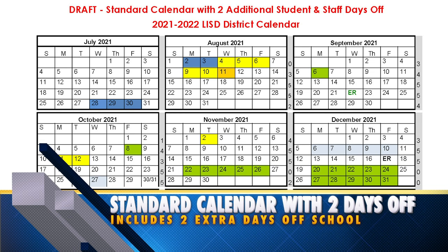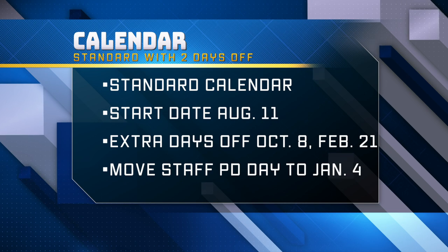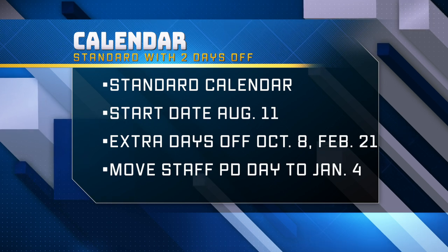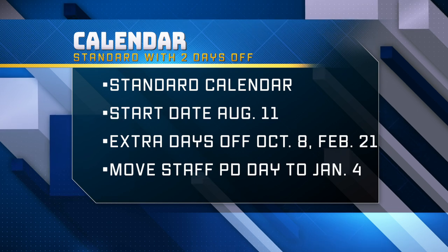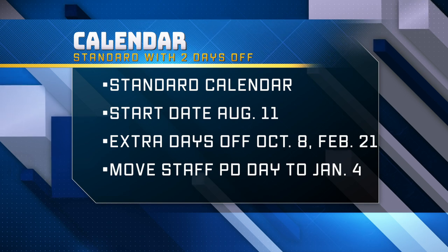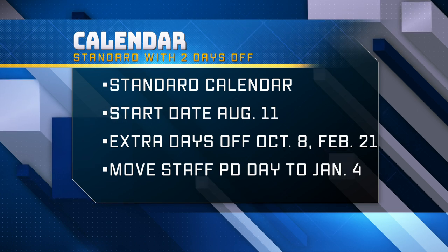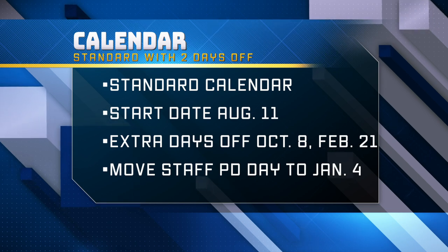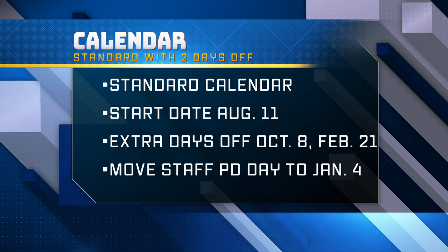The next option adds two extra days off for both students and school staff. A standard calendar with two additional student and staff days off includes the following tweaks: a start date one day earlier on Wednesday, August 11th instead of Thursday, August 12th; a student and staff day off on Friday, October 8th, on top of the professional learning and non-school days the following Monday and Tuesday for our Continuous Improvement Conference; and a staff and student day off on February 21st.